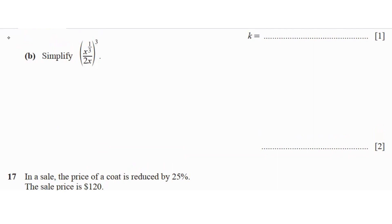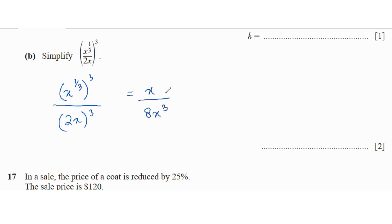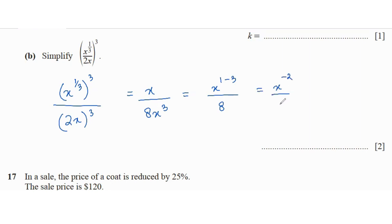To simplify x to the power of 1/3, all over 2x, the whole thing cubed: distribute the power to get x to the power of 1/3 times 3, over 2x cubed, which gives x over 8x cubed. Since we have x in both numerator and denominator, subtract the powers: x to the power of 1 minus 3, over 8, giving x to the power of negative 2 over 8, which is rewritten as 1 over 8x squared.